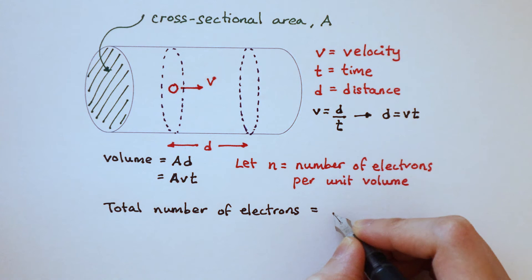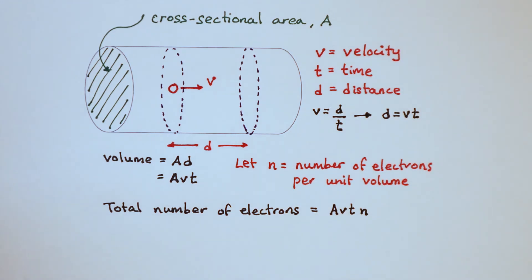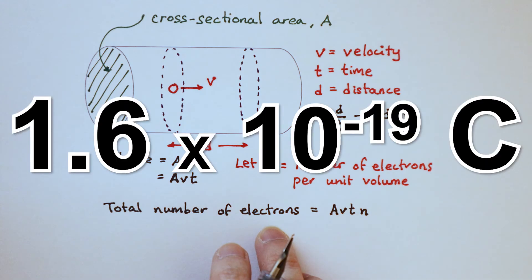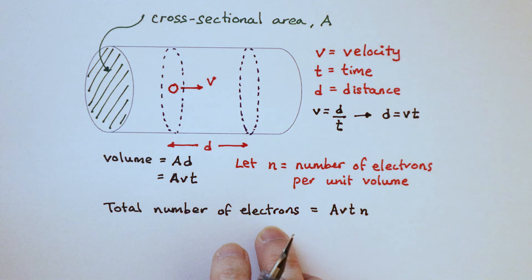But the volume is equal to Avt. So this here becomes Avtn. The charge on one single electron is 1.6 times 10 to the minus 19 coulombs. We can simply represent this by the symbol e.